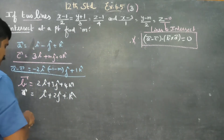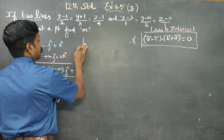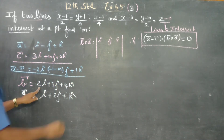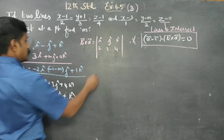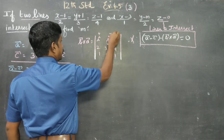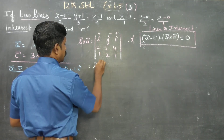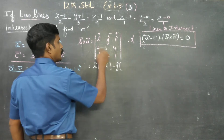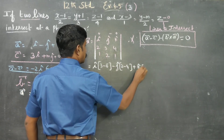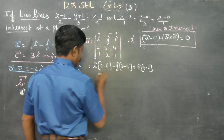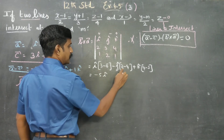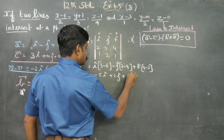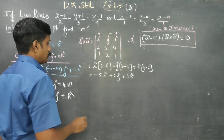Now we compute b cross d. Setting up the determinant with i, j, k: b = (2, 3, 4), d = (1, 2, 1). This gives: i(3×1 minus 4×2) minus j(2×1 minus 4×1) plus k(2×2 minus 3×1) = i(3 minus 8) minus j(2 minus 4) plus k(4 minus 3) = minus 5i plus 2j plus 1k.